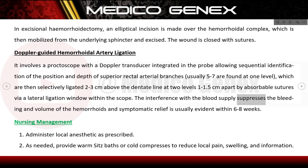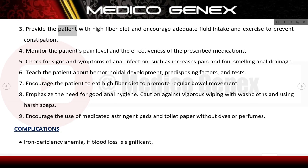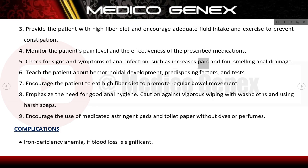The interference with the blood supply suppresses the bleeding and volume of the haemorrhoids, and symptomatic relief is usually evident within 6 to 8 weeks. Nursing management includes administering local anesthetic as prescribed, providing warm sitz baths or cold compresses to reduce local pain and swelling, providing the patient with a high-fiber diet, and encouraging adequate fluid intake and exercise to prevent constipation. Monitor the patient's pain level and the effectiveness of prescribed medications, and check for signs and symptoms of anal infection such as increased pain and foul-smelling anal drainage.